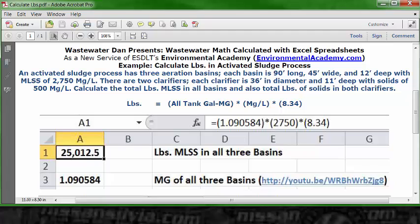C1, type in that description. Go to A1, set that as a number with one decimal, make it bold and centered. Then come to the formula bar and type in: equals, open parenthesis, 1.090584, close parenthesis, multiplication, open parenthesis, 2750, close parenthesis, multiplication, 8.34, close parenthesis. Press enter or the return key, and you're going